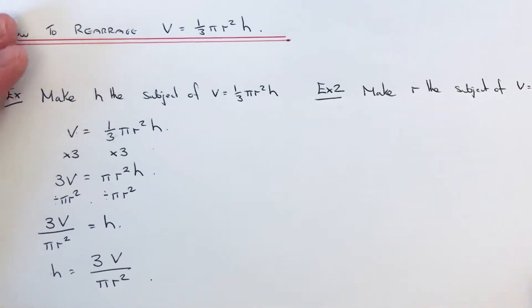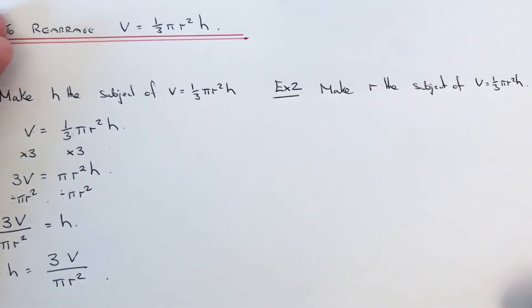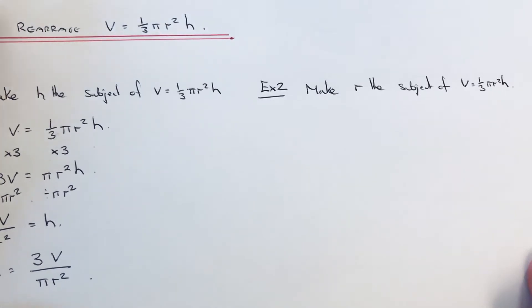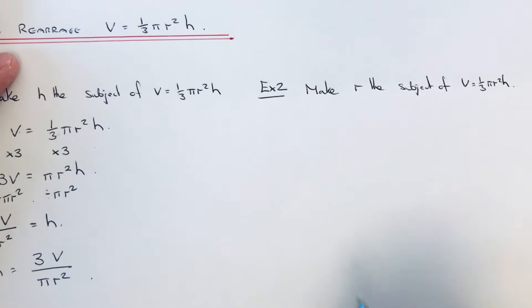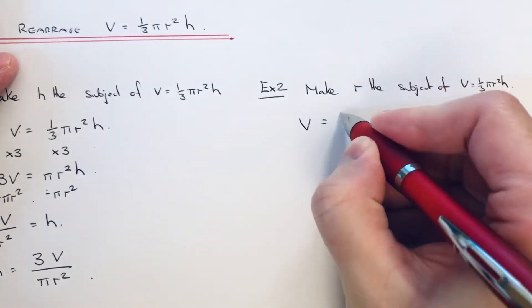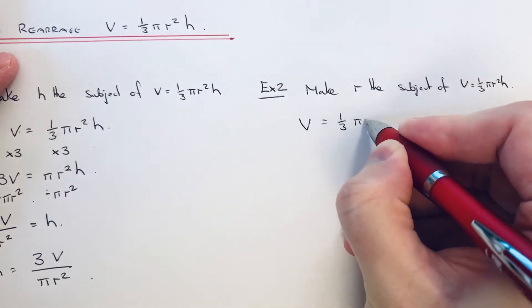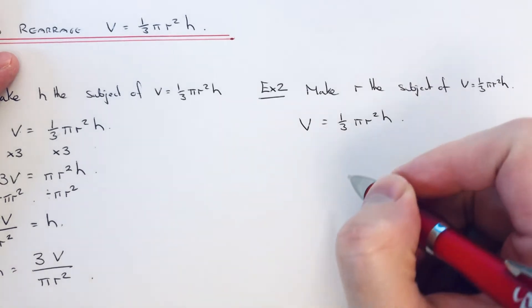Let's have a look at the second example. This time we've got to make r the subject of V = 1/3 πr²h. Let me just copy out the formula again.